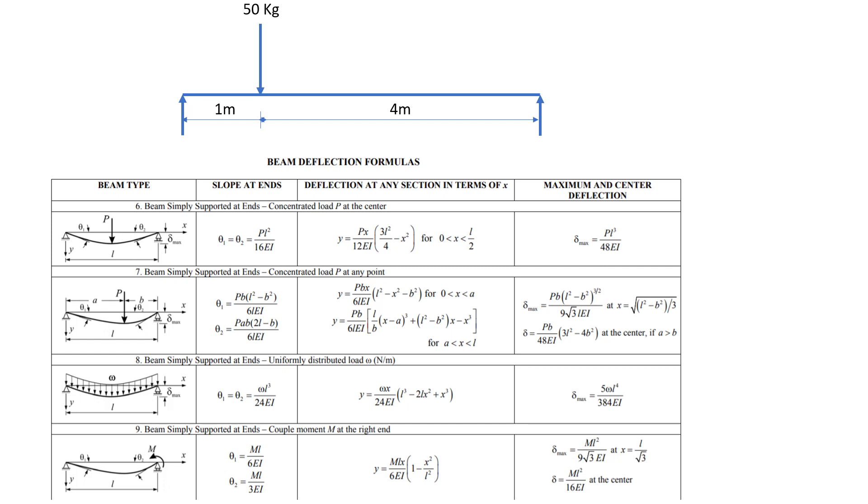The formula is Y = (PBX)/(6LEI) × (L² - X² - B²) for 0 < X < a. This is the formula to find the deflection for concentrated load P at any point.